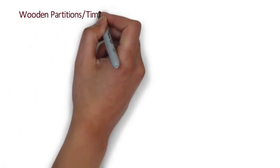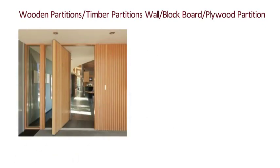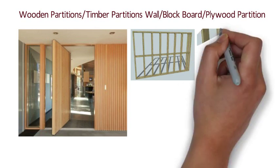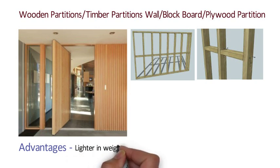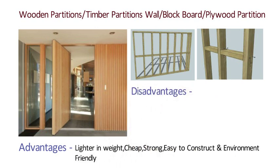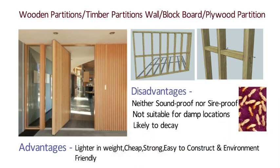Wooden Partitions: Also known as timber partitions, block board or plywood partitions. These types consist of a wooden framework supported on the floor or walls. The plywood or block board is installed on the frame with the help of screws from both sides. The advantages are they are lightweight, cheap, strong, easy to construct and environment friendly. However, disadvantages include they are neither soundproof nor fireproof, not suitable for damp locations, likely to decay or be eaten away by white ants, and are not permanent in nature — needing replacement at intervals.